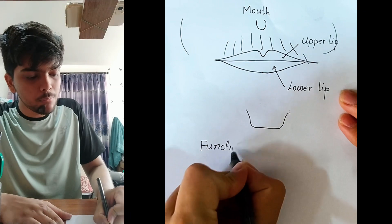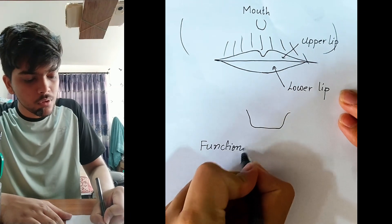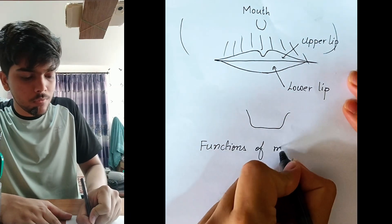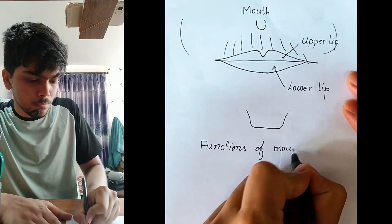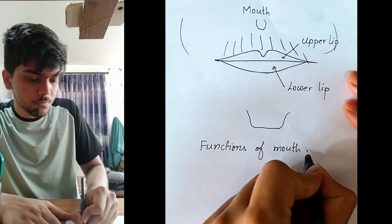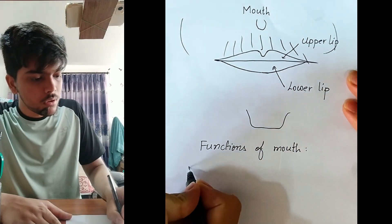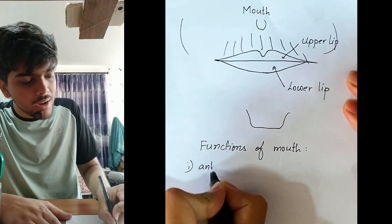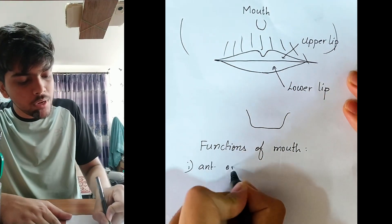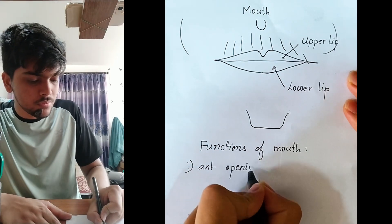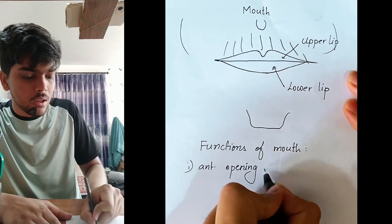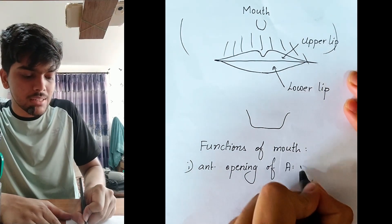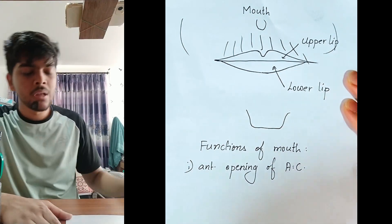Functions of mouth. Number one: it forms the anterior opening of the alimentary canal. The alimentary canal is that long, highly-organized tube through which food passes and gets digested.